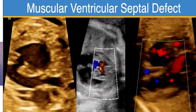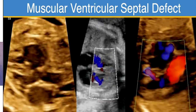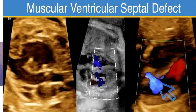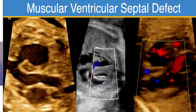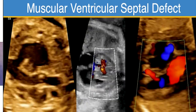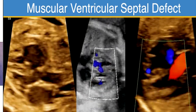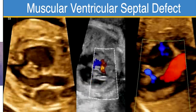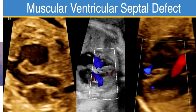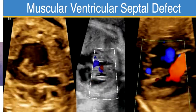Color Doppler shunting is also useful. Here we see shunting from RV to LV, and here it's bidirectional. Sometimes we see left-to-right shunting, sometimes bidirectional. It's unusual to have pure right-to-left shunting. When we see that prenatally, we need to consider right ventricular outflow tract obstruction, ductal constriction, or pulmonary stenosis as a reason for the right-to-left shunting direction.